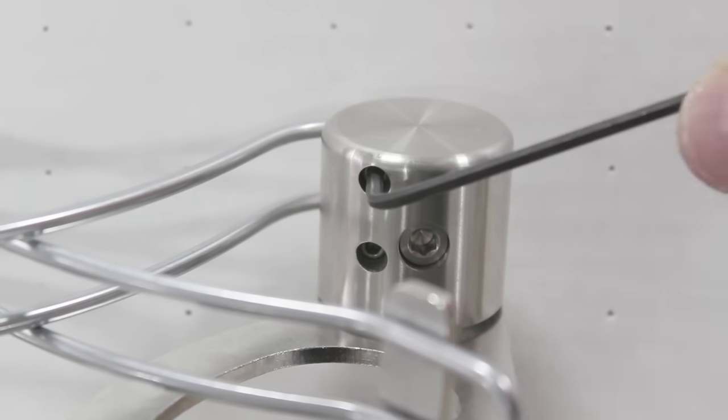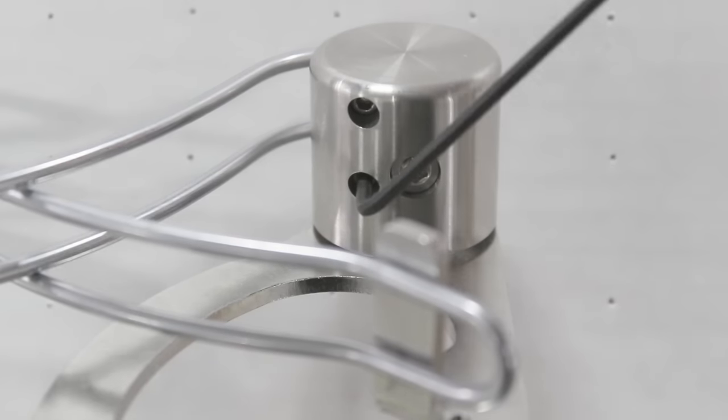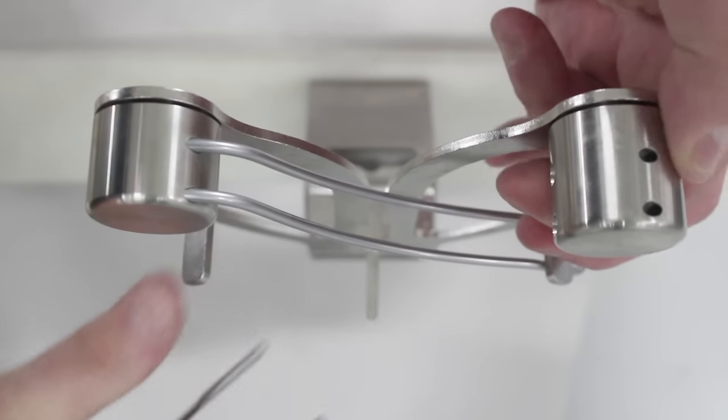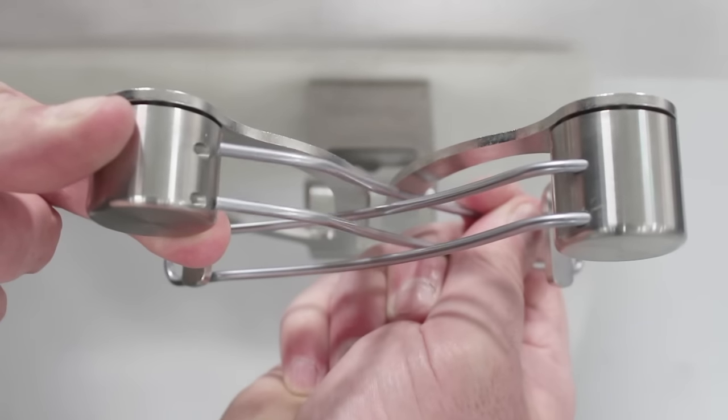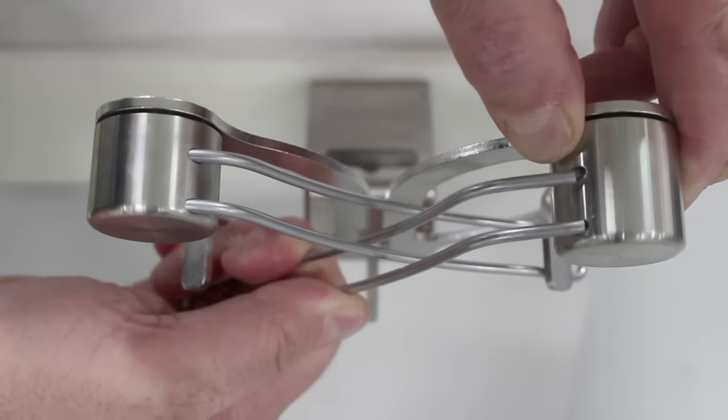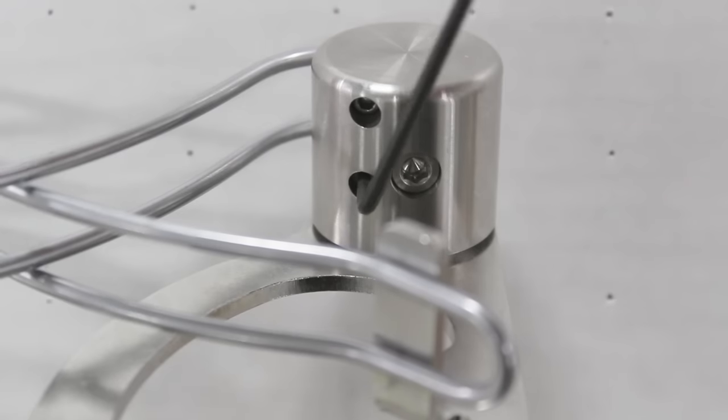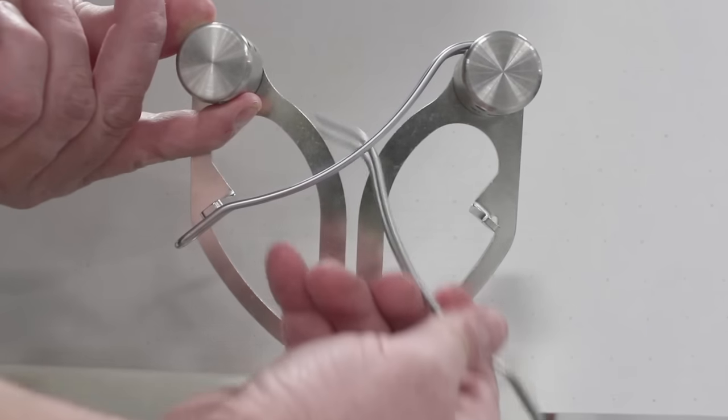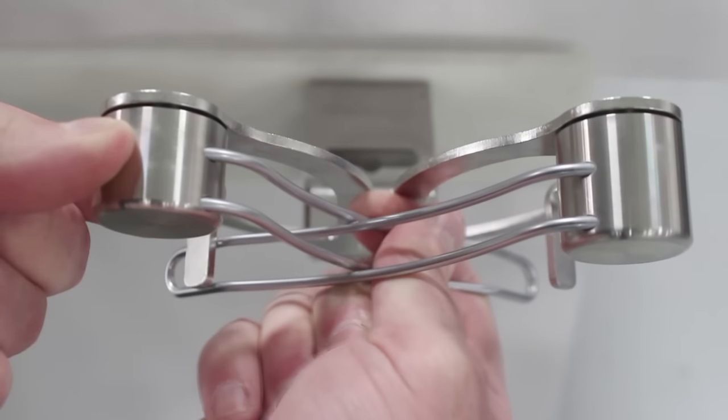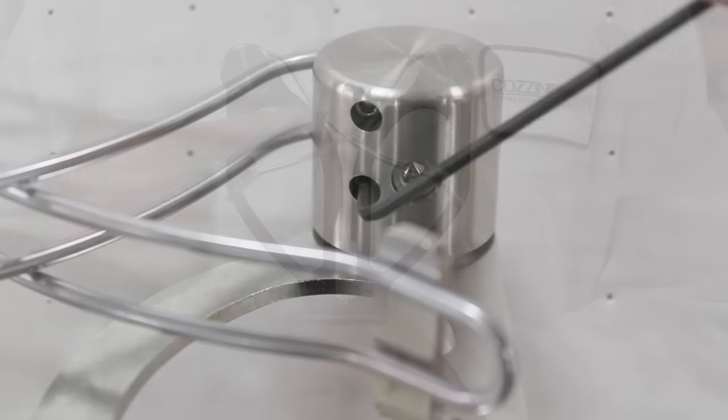To replace the alignment rods on stainless steel ErgoSteel models, first loosen the two alignment rod retaining screws. Then, simply slide the alignment rods out of the hub. To install the alignment rods, rotate the right hub assembly counterclockwise to produce the proper tension. Install the alignment rod fully into the hub and tighten the alignment rod retaining screws. Make sure the alignment rods spring back.